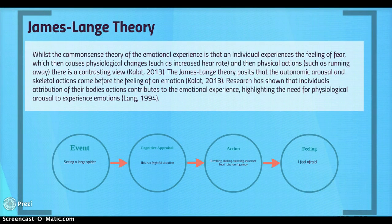The James-Lange theory contrasts with the common sense theory of emotional experience. Whilst the common sense view holds that an individual experiences the feeling of fear, which then causes physiological changes such as increased heart rate, and then physical actions such as running away, the James-Lange theory posits that the autonomic arousal and skeletal actions come before the feeling of an emotion.